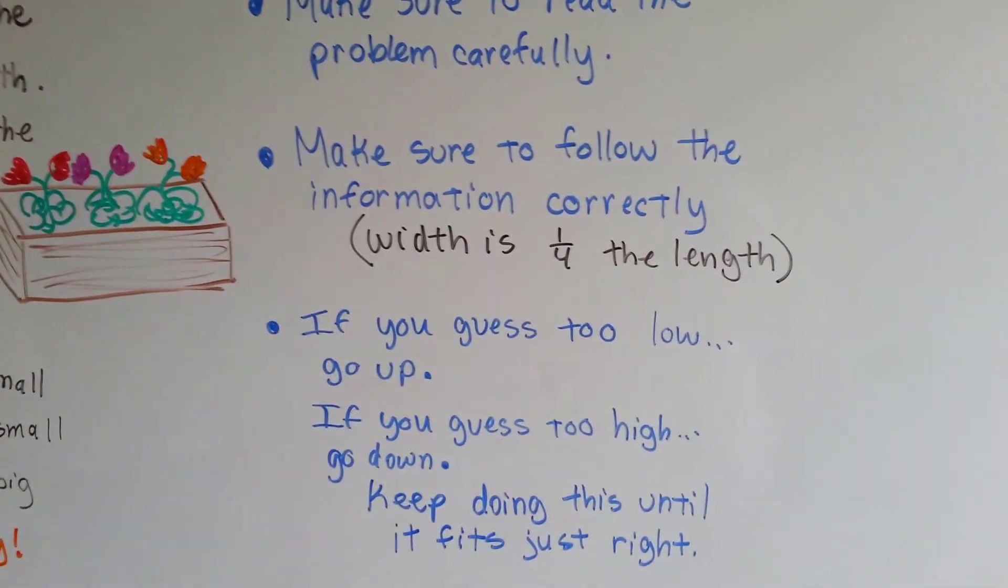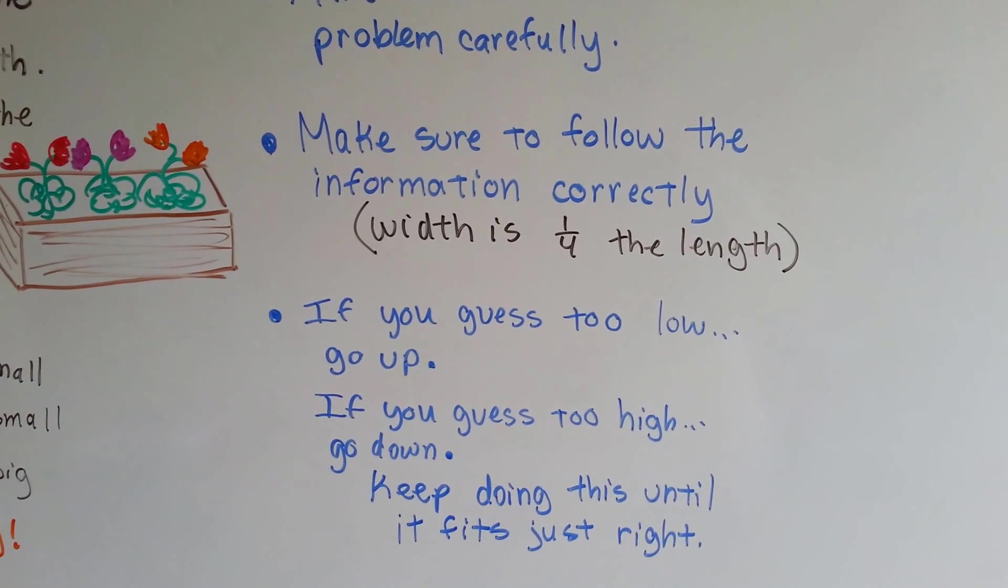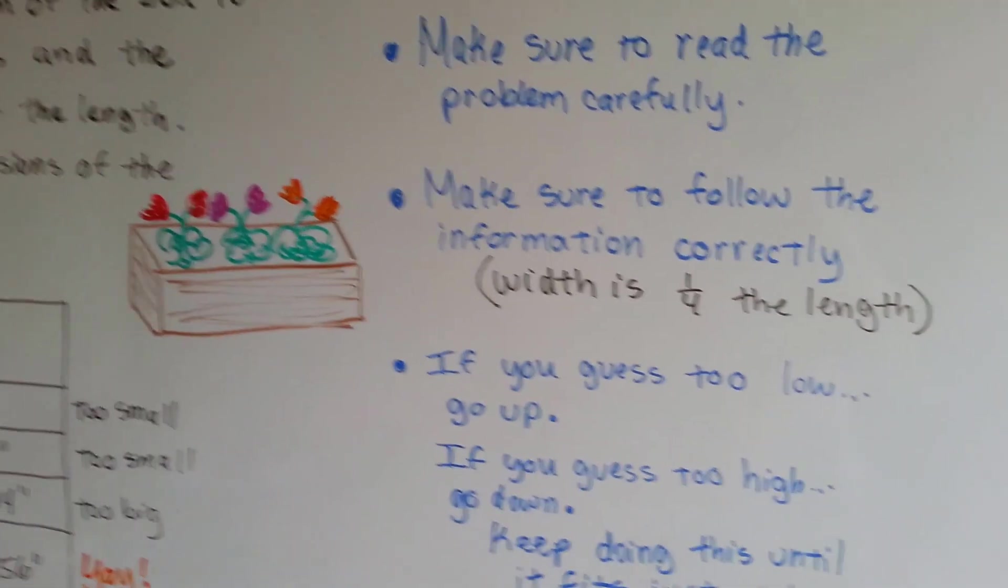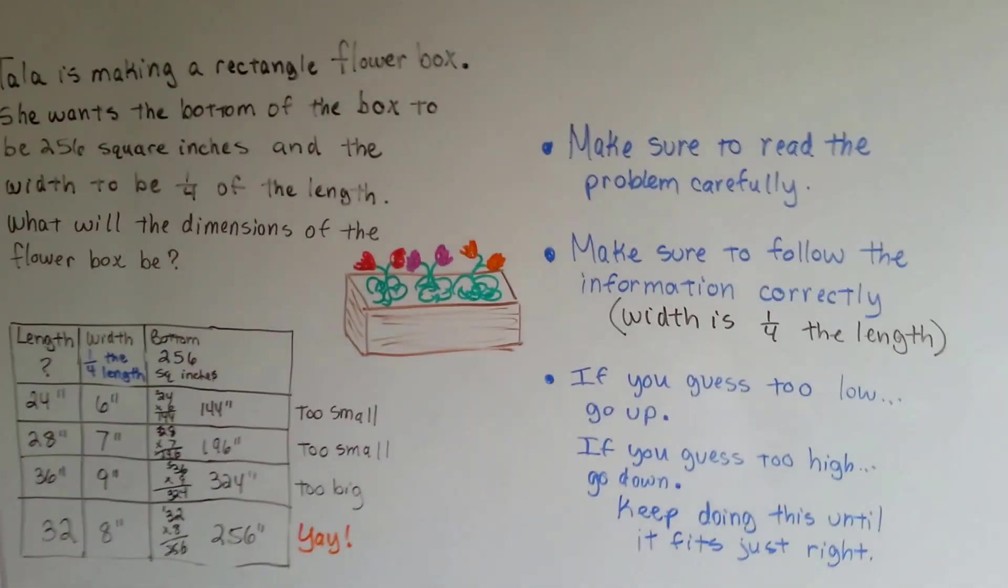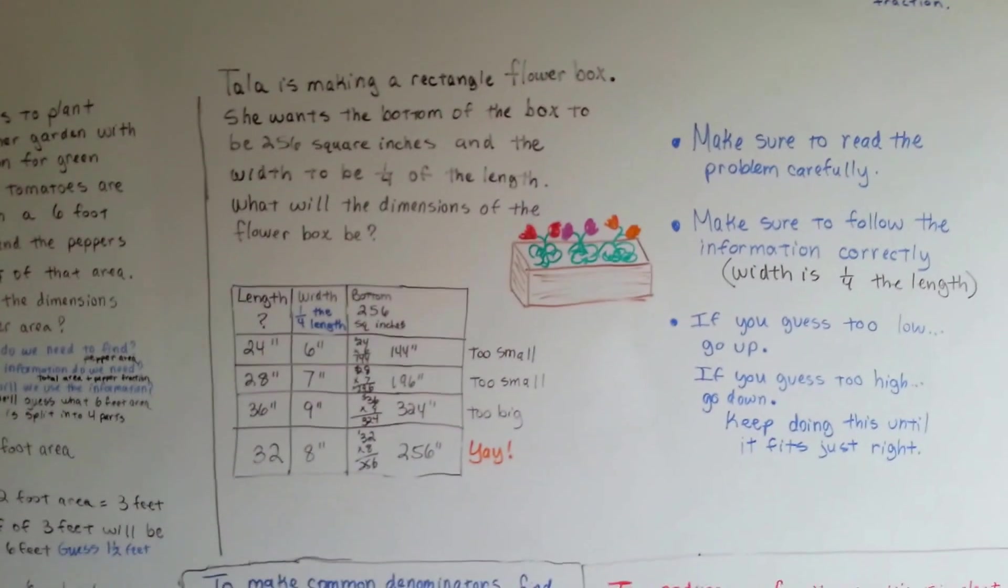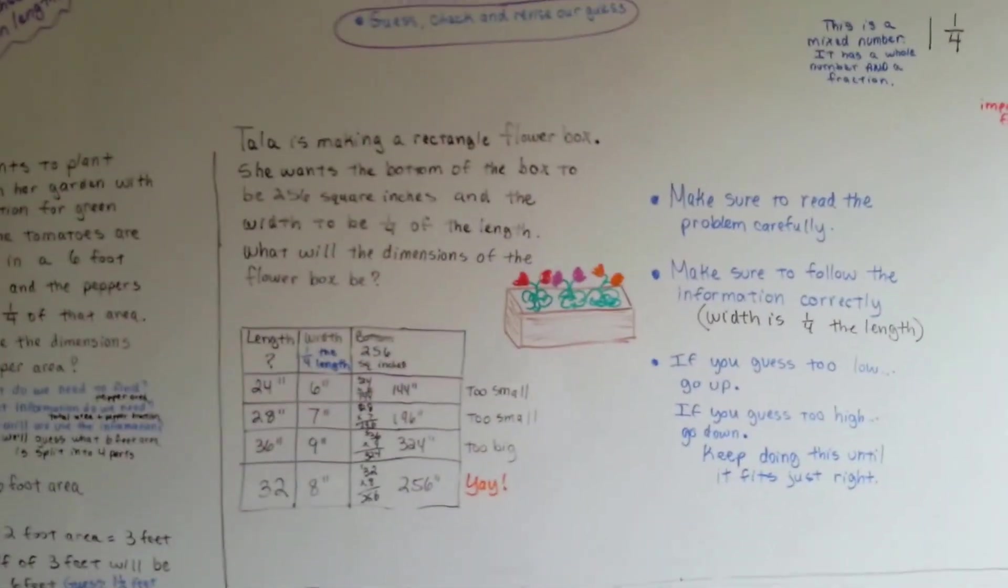So if you guessed too low, go up a bit. If you guessed too high, go down. And keep doing this until it gets just right. All right? So we actually made a table and we guessed and checked, didn't we? So we did two of the strategies.